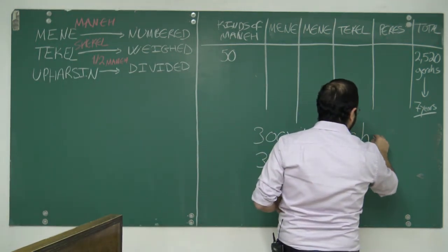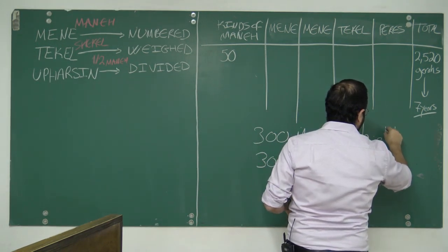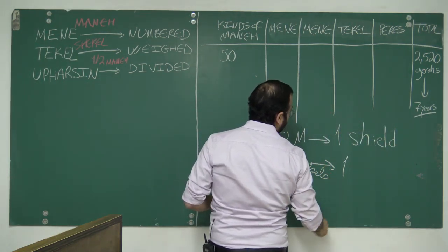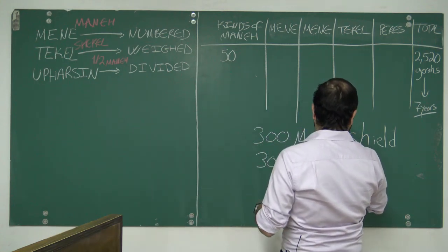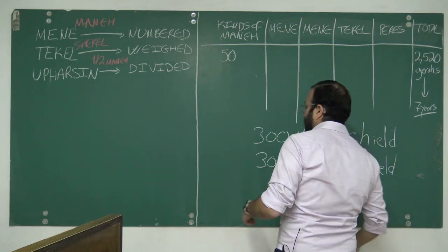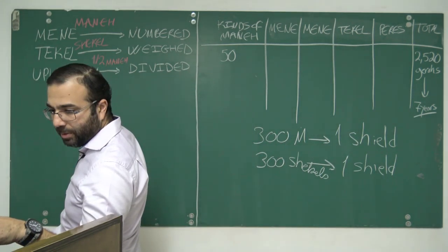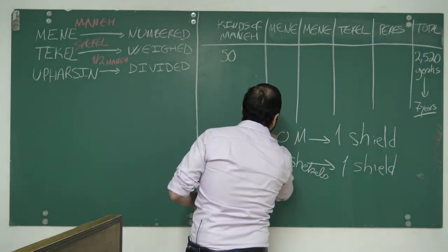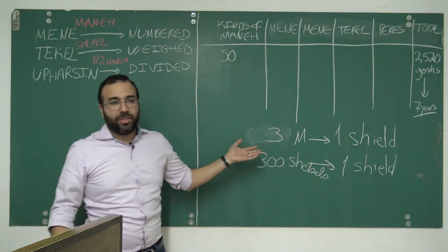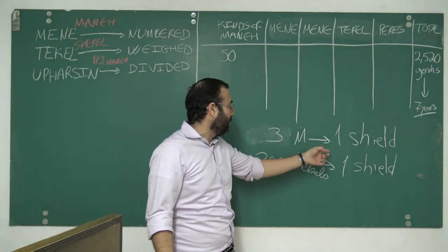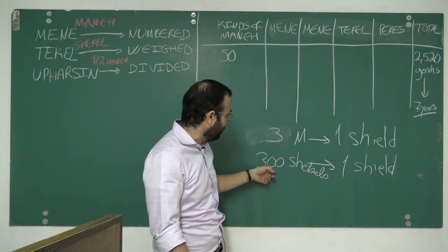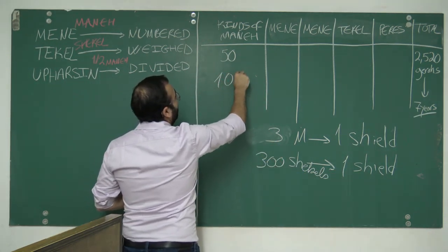Three hundred mene, or 300 mene went to one shield. Compare that to Second Chronicles 9:16, which tells you that 300 shekels of gold went to one shield. If three mene is one shield and 300 shekels is one shield, then you divide 300 by three and you get that the money is 100.